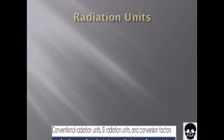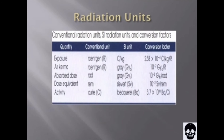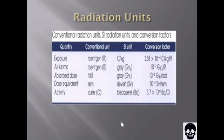Next we discuss radiation units. A special set of units is used to express the quantity of ionizing radiation. The units — the roentgen, the rad, and the rem — have been developed and defined over many years and are familiar to radiologic workers. However, those in educational programs and professional practice must also become familiar with a second set of radiation units derived from the International System of Units.